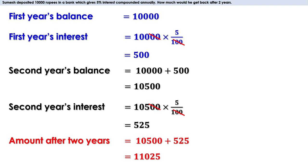First year's interest is 5/100 of 10,000, giving 500, which is added to get 10,500. Second year's interest is 5/100 of 10,500, giving 525, added to make 11,025 after two years. For a third year, 5/100 of 11,025 is added. So after each year, 5/100 of the current balance is added. If the current balance is x, then 5/100 of x must be added.